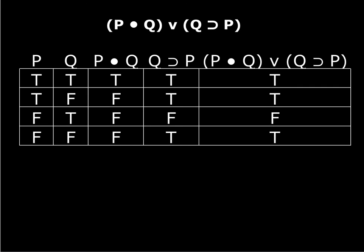I'm going to end the video here because we've done a reasonable amount of stuff. I've introduced the disjunction and conditional truth functions, and we've done an example of a truth table that uses all of our two-place operators — conjunction, disjunction, and conditional — to make the compound statement. There's no negation in there, but we'll have examples coming up that use negation. That's it — study hard.